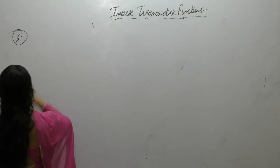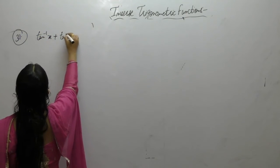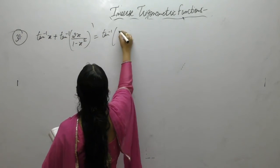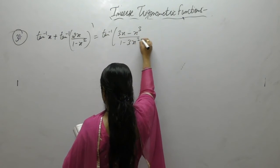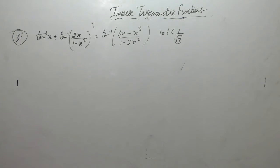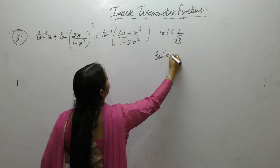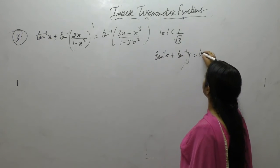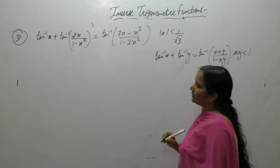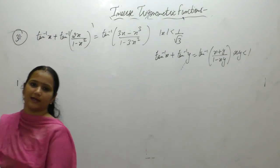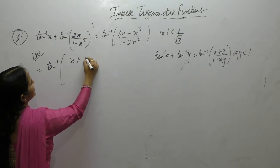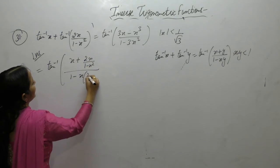Prove that tan⁻¹x + tan⁻¹(2x/(1-x²)) = tan⁻¹((3x-x³)/(1-3x²)). Apply the formula: tan⁻¹x + tan⁻¹y = tan⁻¹((x+y)/(1-xy)), if xy < 1. Here xy = 2x²/(1-x²) which is less than 1.